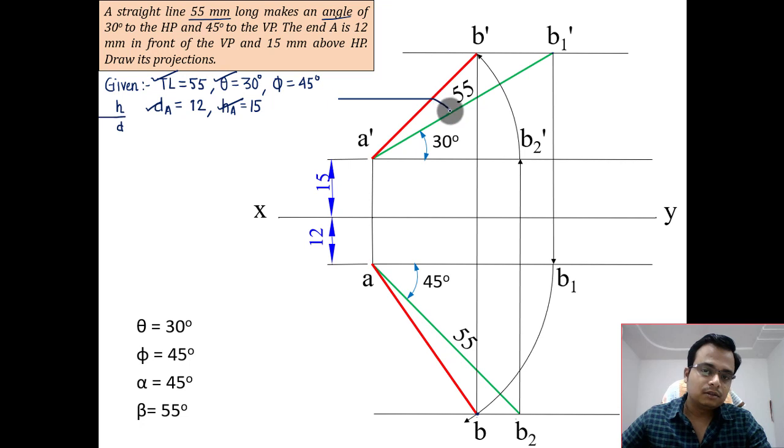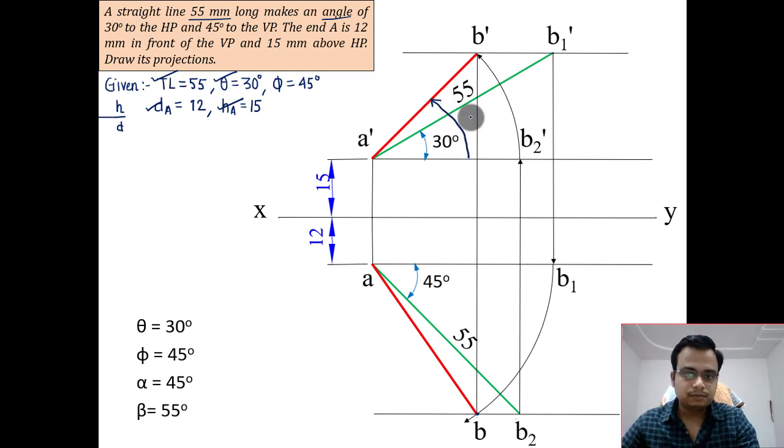Theta and phi were given to us. Alpha and beta, well that has been worked out from the diagram itself. This is alpha.